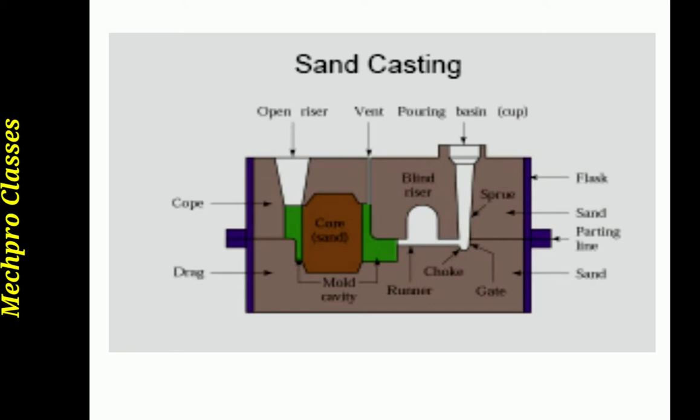Here we will separately find the flasks, the sprue, the gate, the choke, the runner, the pouring basin, the vent, the sand, and the parting line as well. This is also the same figure for your ready reference.